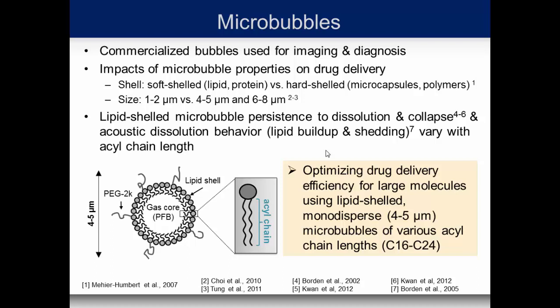We have looked at size before and reported that larger bubbles after sorting, especially above 4 to 5 microns, tend to be much more effective in opening the barrier over large volumes for the same threshold compared to smaller bubbles of 1 to 2 microns, which is more what the diagnostic bubbles are centered at as a median diameter. Lipid shell microbubbles persist to dissolution and collapse, and their acoustic dissolution behavior depends on the acyl chain length. This is a lipid-coated bubble with a gas core of perfluorobutane, and we're going to vary this acyl chain to see its effect on blood-brain barrier opening.